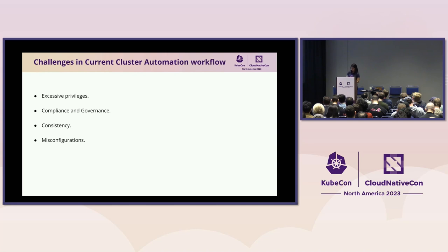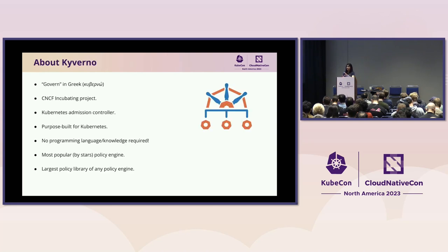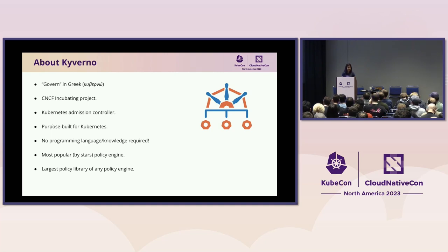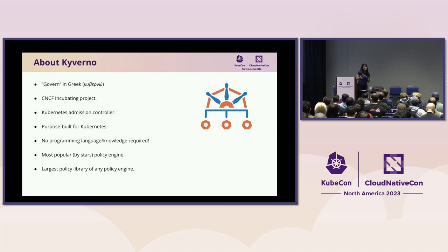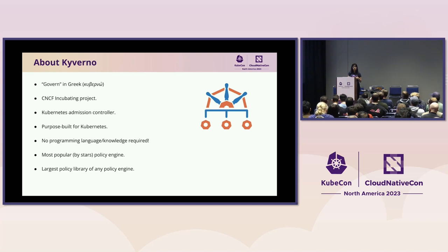Kyverno means 'govern' in Greek language. It's a CNCF incubated project. We have a large amount of policy sets on our website and are the most popular policy engine by stars. We are Kubernetes native — just like Crossplane, you can write a policy in a simple YAML file without learning anything else. We don't just have validate policy — we can do more. We have generate policy, mutate, image signing use cases, and cleanup policies. One simple example of generate policy: if a namespace gets created, automatically create request limit, quota, network policy, and more resources.